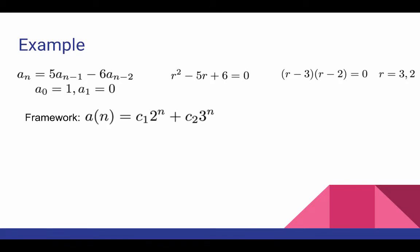And there are two initial conditions to consider. When n equals zero, we know that a(0) is equal to one by definition. And so a(0) is also equal to this, which is what we get by taking the framework formula and plugging in n equals zero.